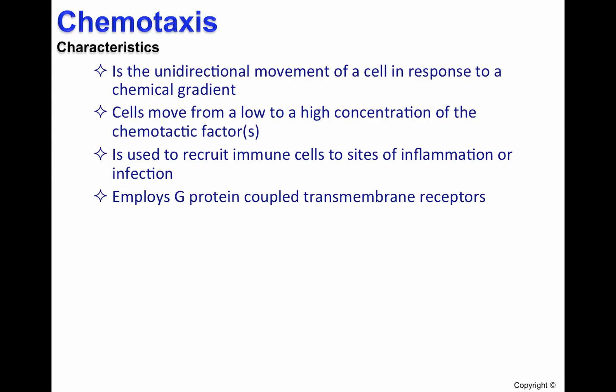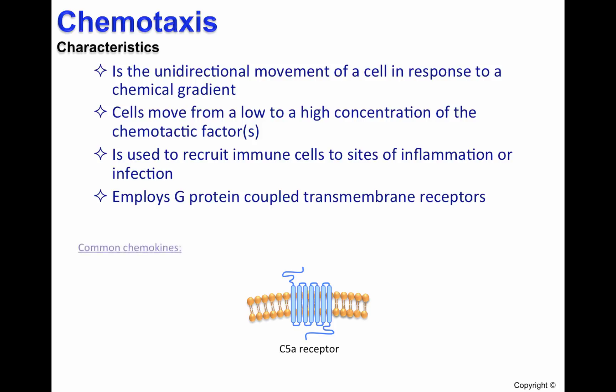Chemotaxis employs G-protein coupled transmembrane receptors, such as the C5A receptor shown here. Some common chemokines include platelet activating factor, leukotriene B4, other chemokines, and C5A.